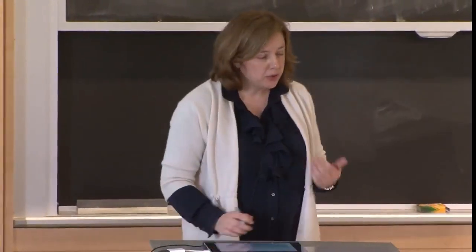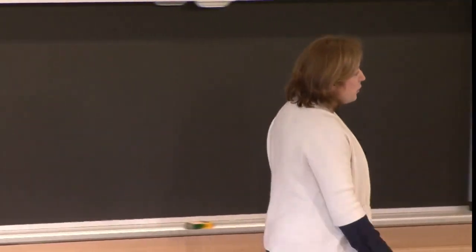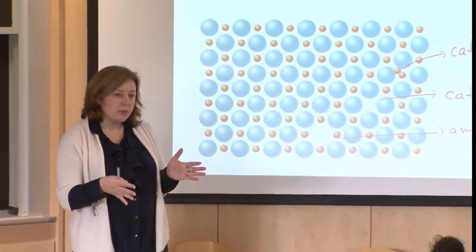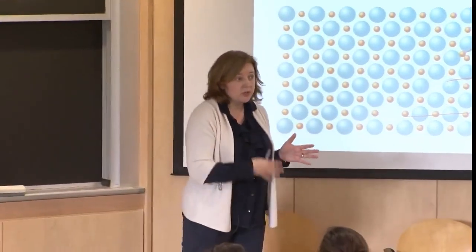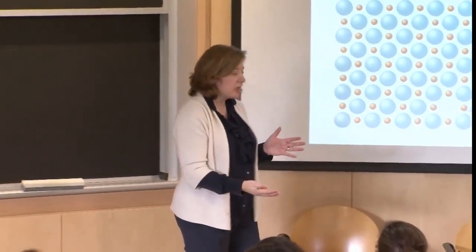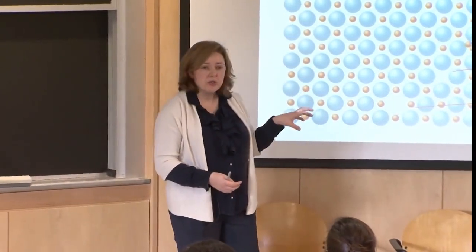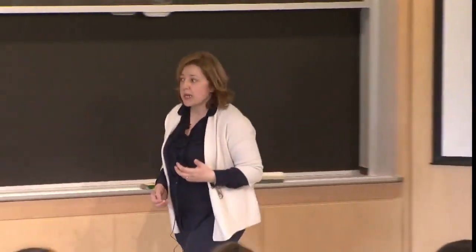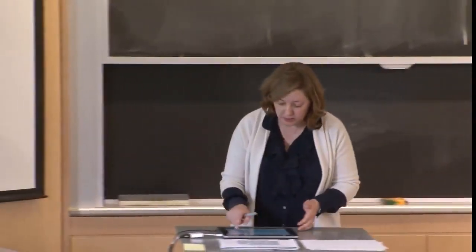If you form one type of defect — say you remove one anion from the crystal — because it carries a certain charge, you have to compensate that charge to keep the overall charge neutrality of the crystal. If you simply remove it, you must form another type of defect to compensate for that. There are two different types of combinations that exist in ionic crystals.